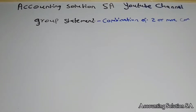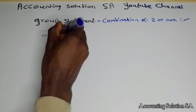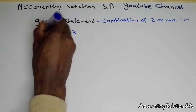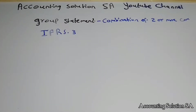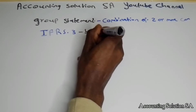There are certain standards that you have to understand in and out so that you will be able to prepare your group statements. Firstly, you have to understand IFRS 3. This is the first standard that you have to understand thoroughly when dealing with group statements. IFRS 3 deals with business combination.